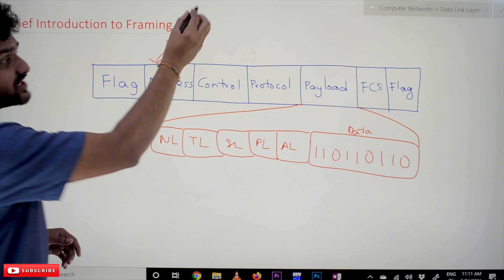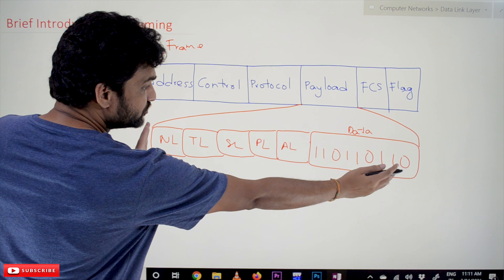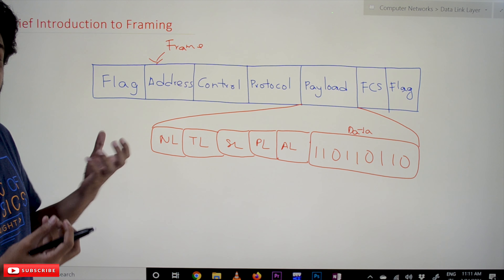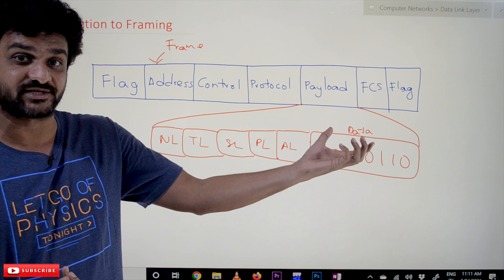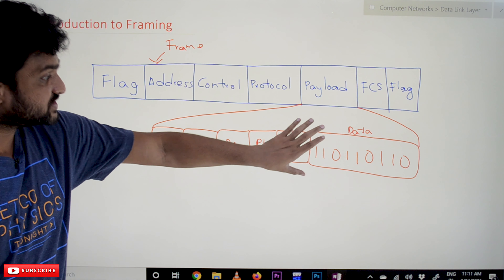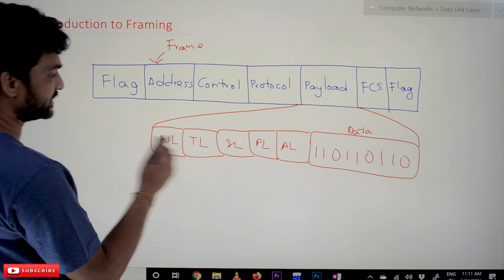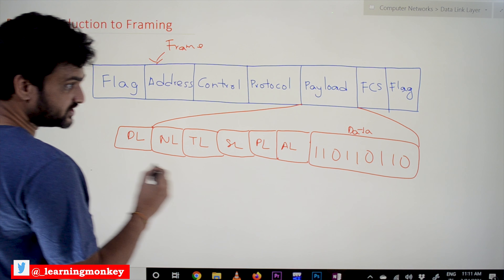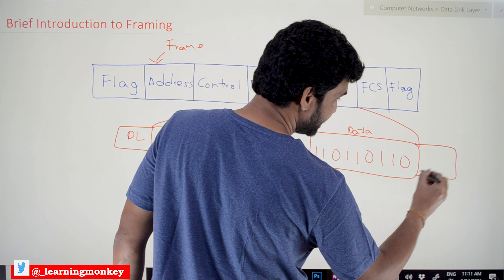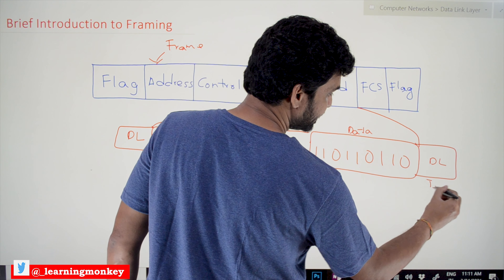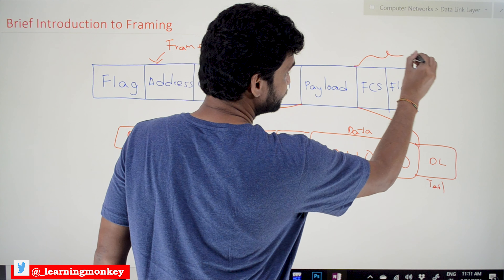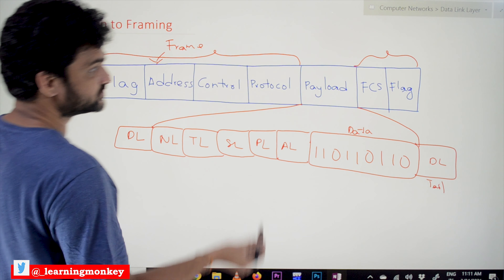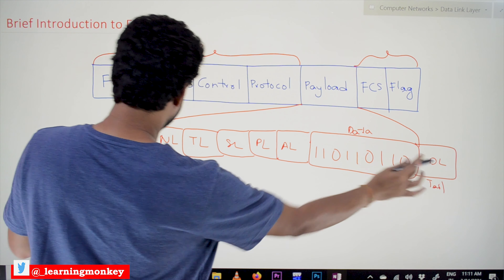In the network layer, this content is what we call a packet. The frame is the only unit that has both a header part and a tail part, whereas the remaining layers have only a header part. The data link layer content has a header part and also a tail part — the tail part being the FCS flag at the end.